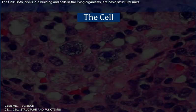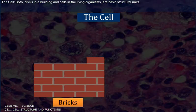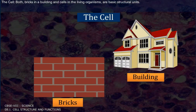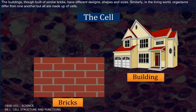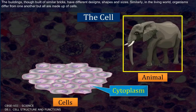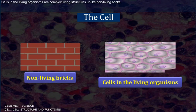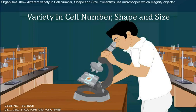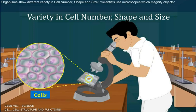Both bricks in a building and cells in living organisms are basic structural units. Buildings, though built of similar bricks, have different designs, shapes and sizes. Similarly, in the living world, organisms differ from one another but all are made up of cells. Cells in living organisms are complex living structures, unlike non-living bricks. Organisms show different variety in cell number, shape and size.